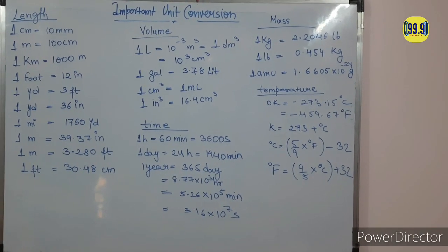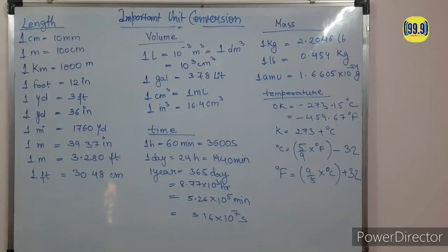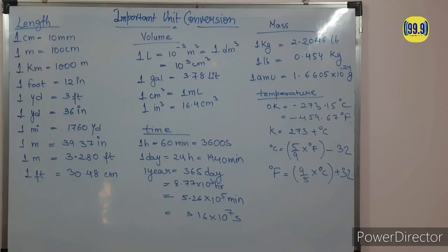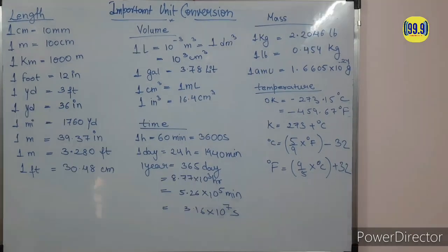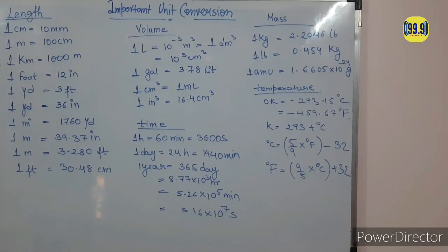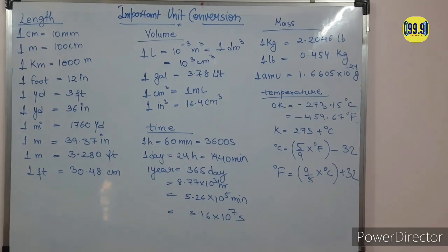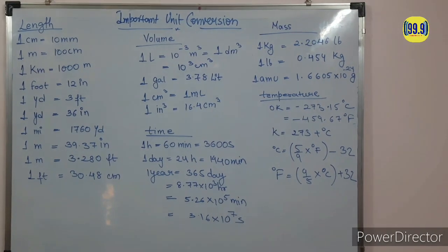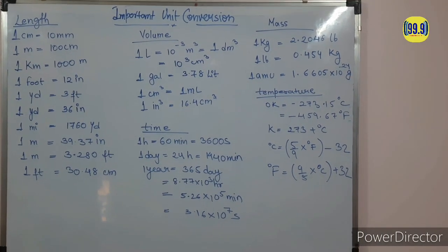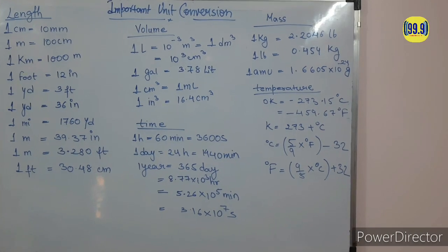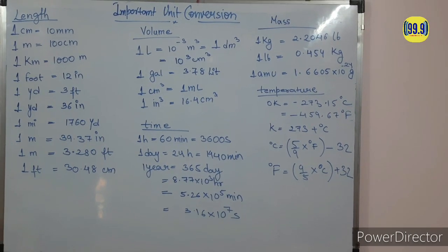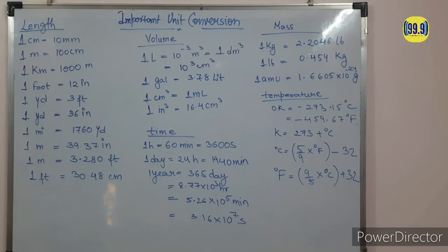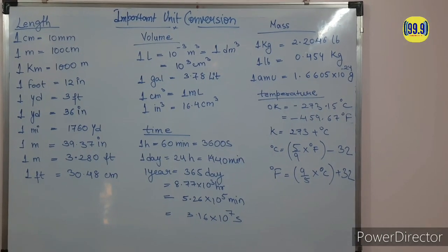In terms of seconds, 1 year is equal to 3.16 × 10⁷ seconds. Now come to the unit of mass. 1 kg is equal to 2.2046 lb, and 1 lb is equal to 0.0454 kg. 1 amu is equal to 1.6605 × 10⁻²⁴ grams.